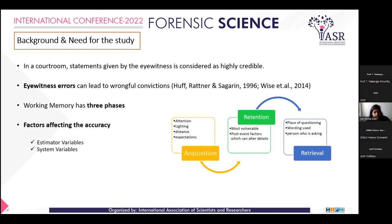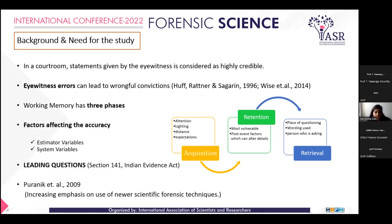Estimator variables are those we don't have control over, and they occur in the acquisition stage. System variables are those we do have control over, such as the wording of questions, who is asking the questions, types of questions like yes or no, or misleading information. That brings me to the first variable of my study: leading questions.